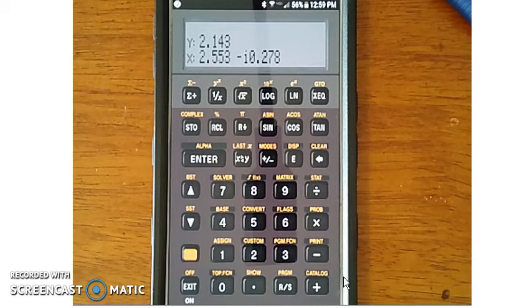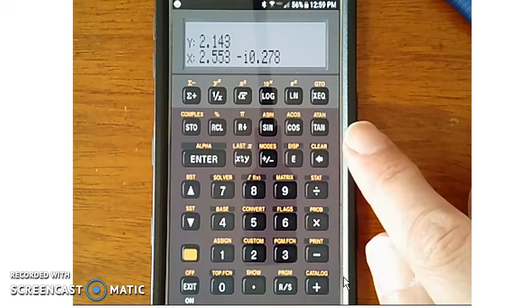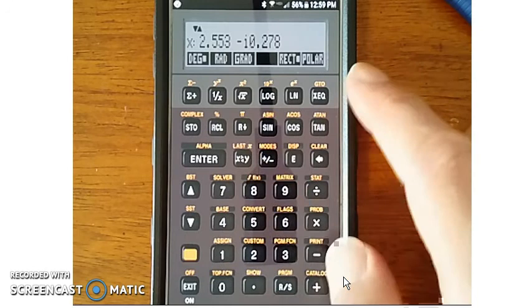One last thing to mention, to go to polar form. If I do modes, there it is, modes, polar. That same number is 2.5 at minus 6 degrees.